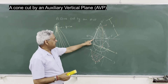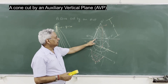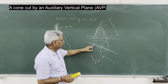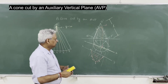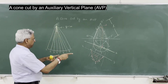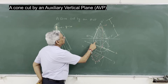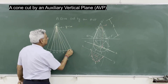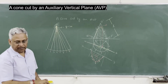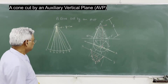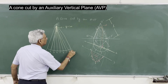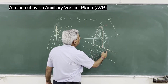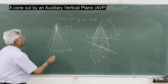Point A is on the base. Take this A — measure 1-A on the base, and plot it here as point A on the development. Similarly, F is on 4-5, so measure on 4-5 — this is F.